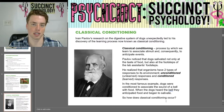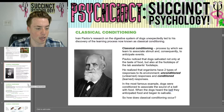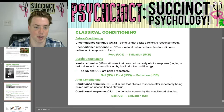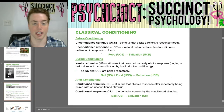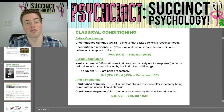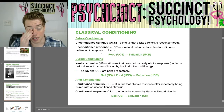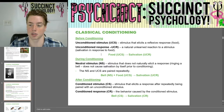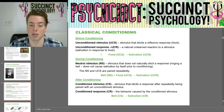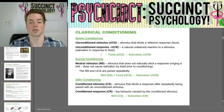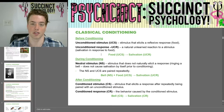So how does classical conditioning occur? Before conditioning, there's the unconditioned stimulus (UCS), which is a stimulus that elicits a reflexive response — in this case, food. And the unconditioned response (UCR) is a natural but unlearned reaction to a stimulus — so the salivation response to food is the UCR. Food (the UCS) leads to the unconditioned response: salivation.